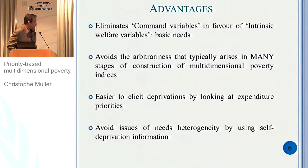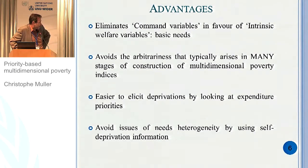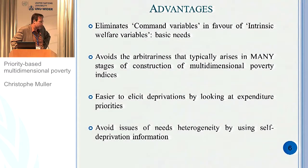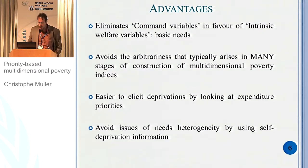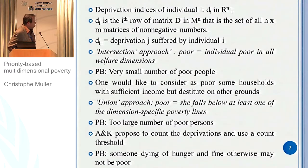This approach has many advantages. First, you don't need to use common variables because you can work with stated needs or stated deprivation instead of necessarily income. You can avoid the arbitrariness that arises at many stages in the construction of poverty indices. And it's empirically easier to elicit deprivation by asking people about expenditure priorities rather than having very vague general questions. By concentrating on self-reported deprivation, you can also avoid many issues with needs heterogeneity.